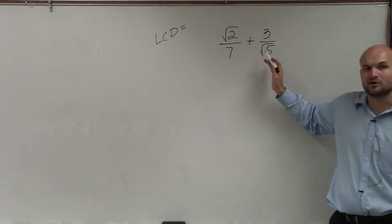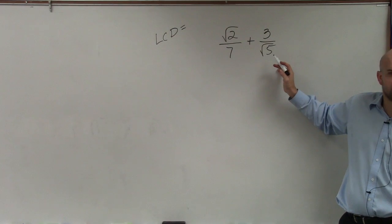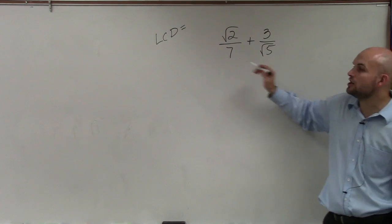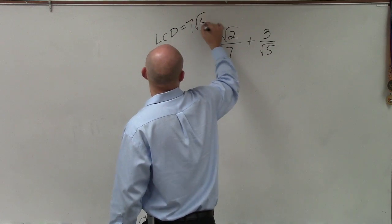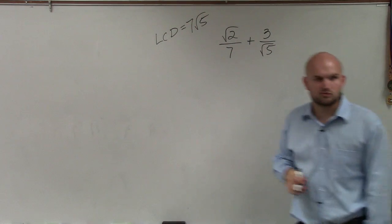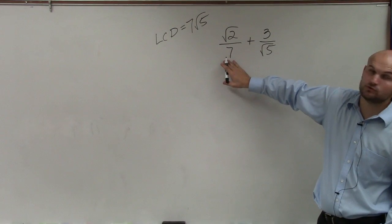But when you have something like 7 and √5, the LCD is not really going to be as apparent. So the easiest way to determine the LCD is just to multiply our two denominators, which would be 7√5. If I already have 7 and need to get an LCD of 7√5, I need to multiply by √5 on the top and bottom.